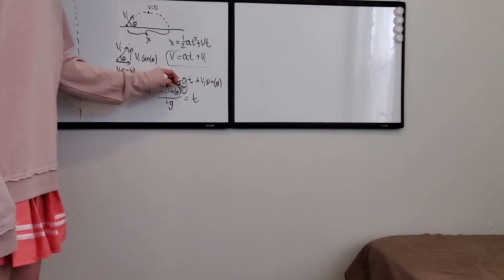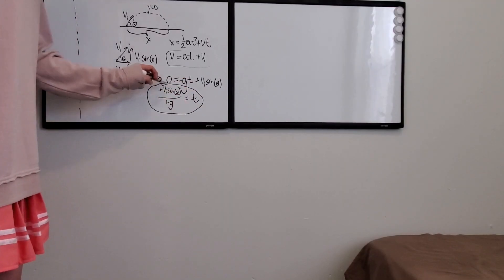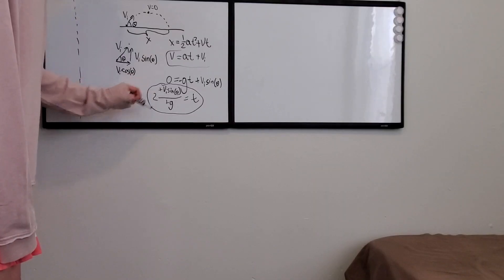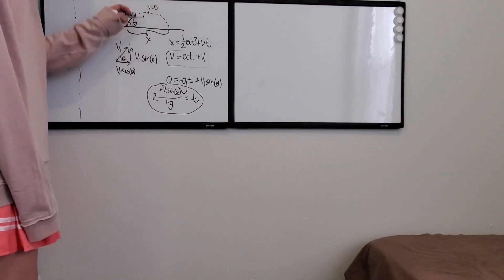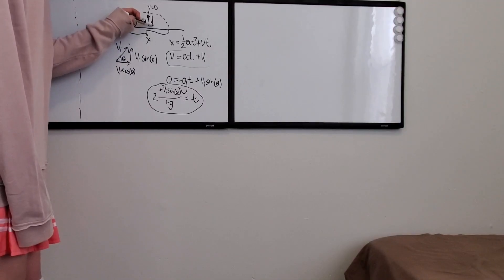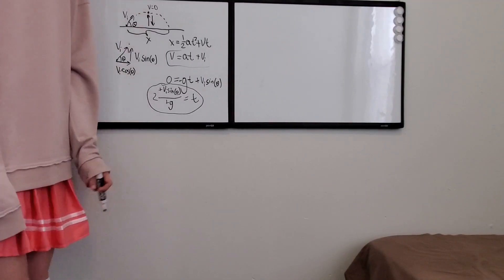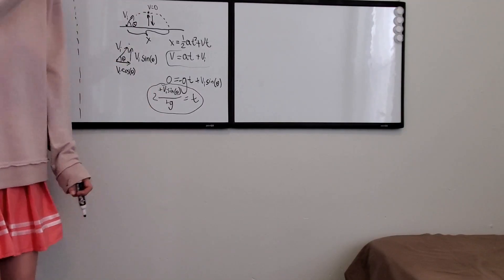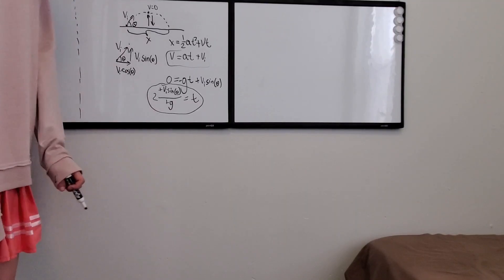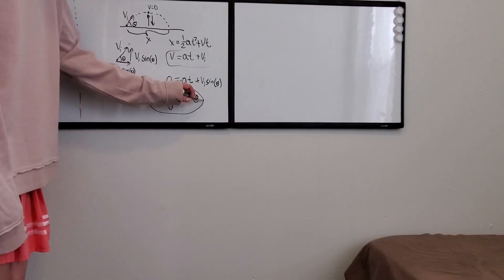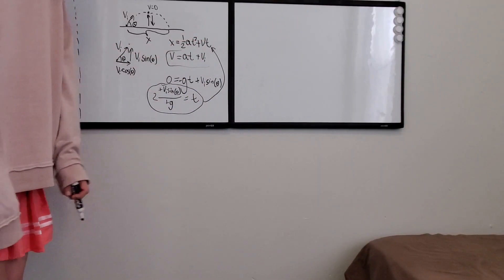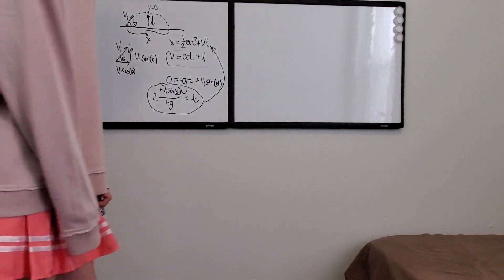Now we have our t — how long it's in the air. Don't forget to multiply this by 2, because that's how long it takes to go up, but we also have to remember that we need to go down too. That takes an equal amount of time, so you just multiply it by 2. Now that we have t, we can just plug this into the x equation.